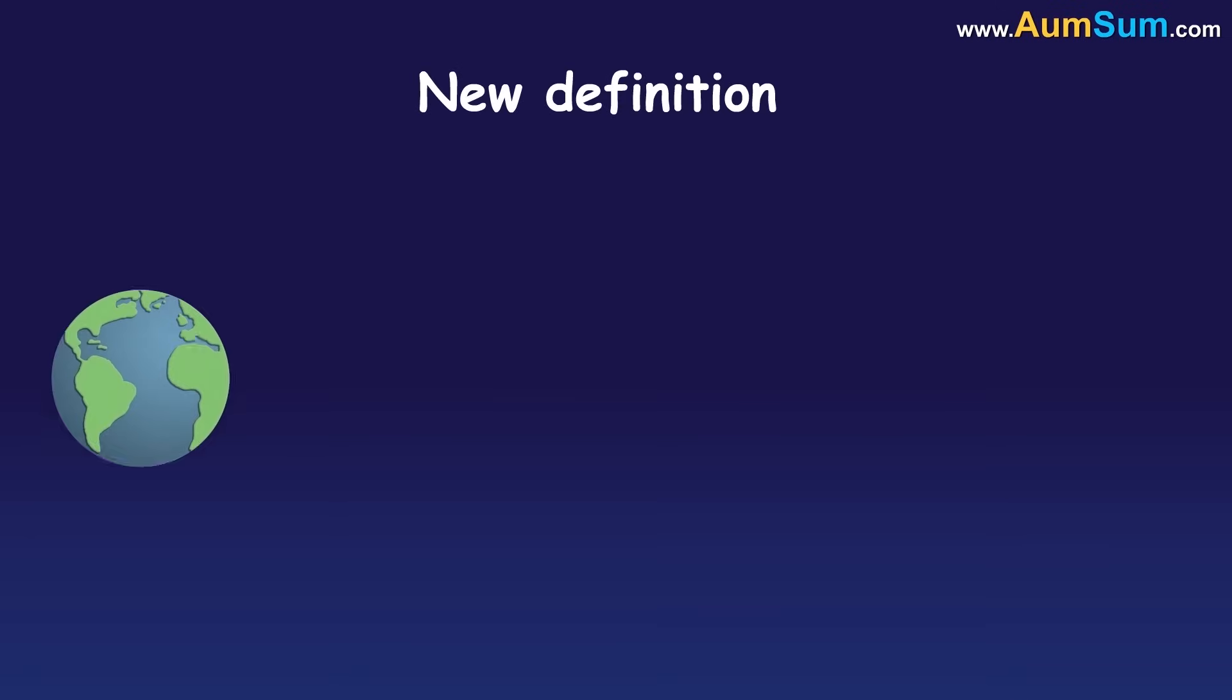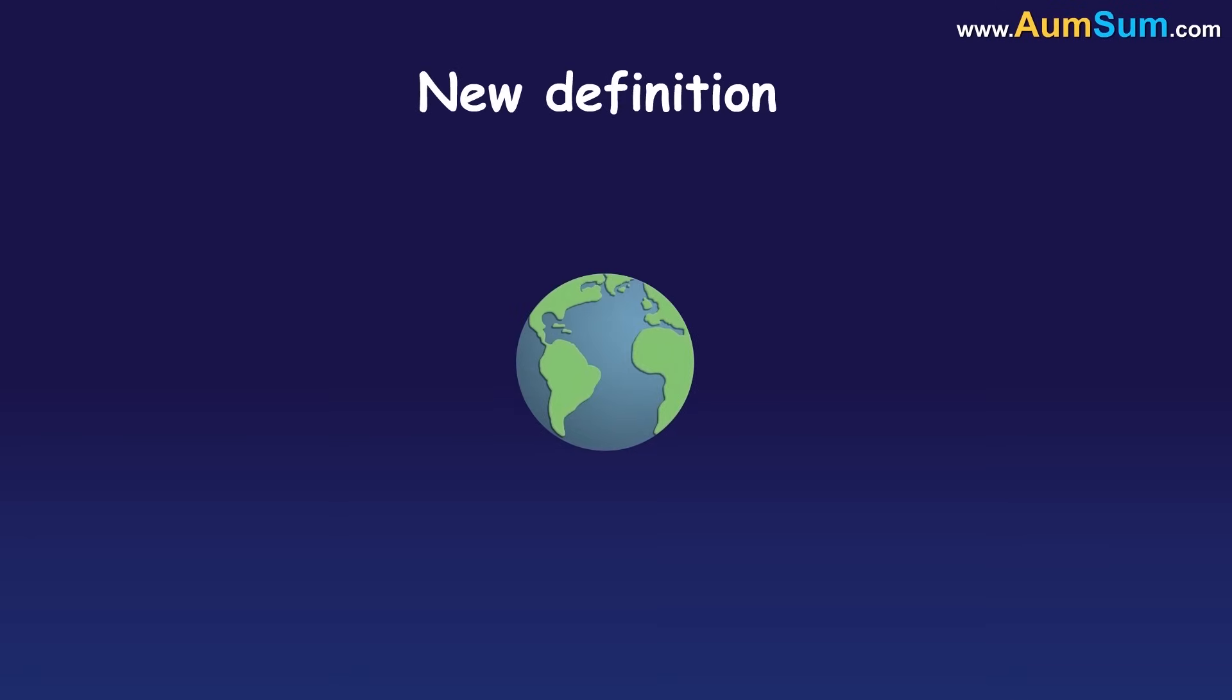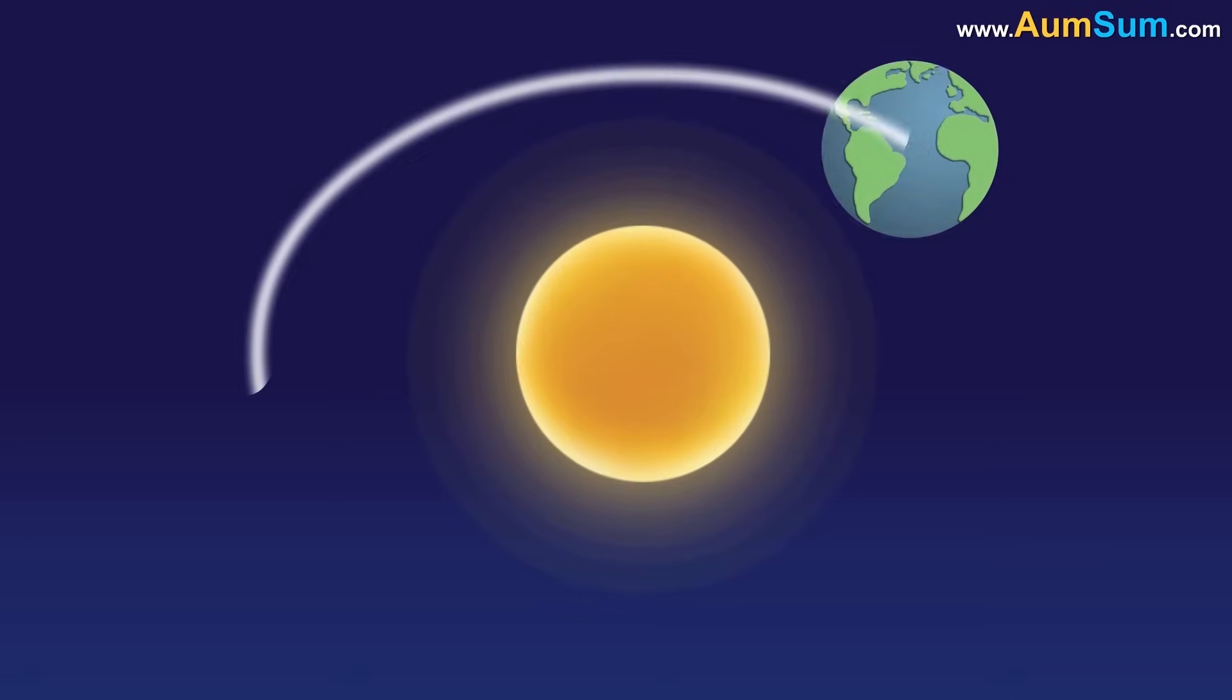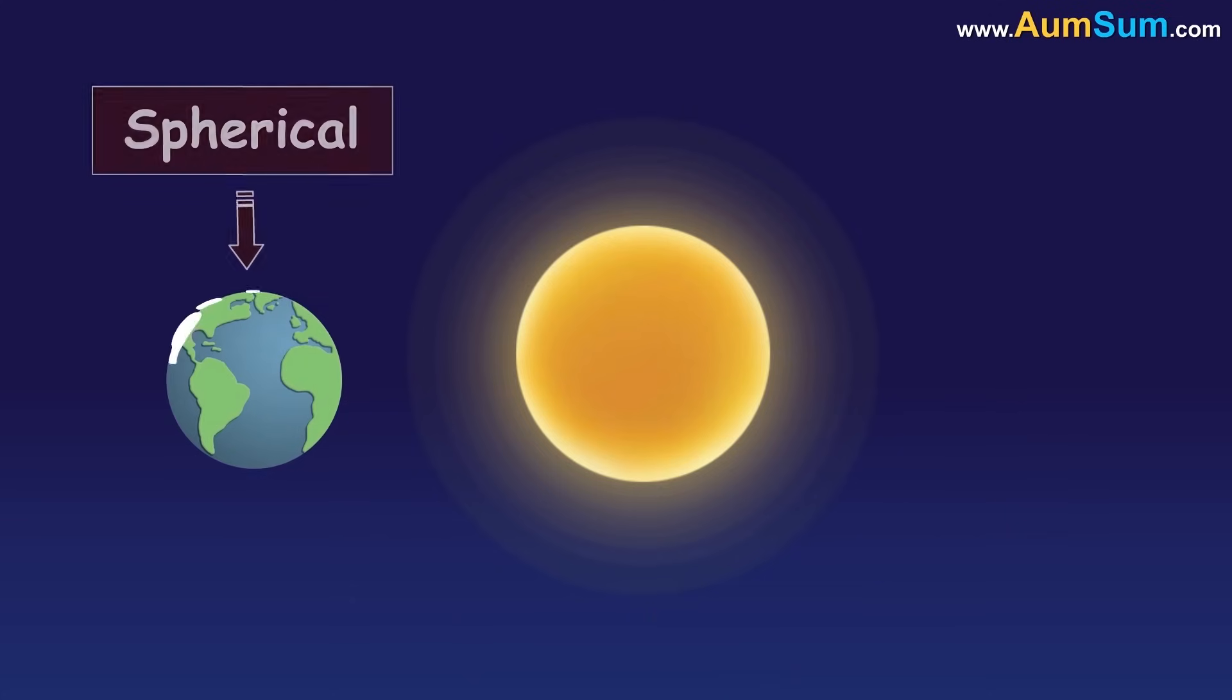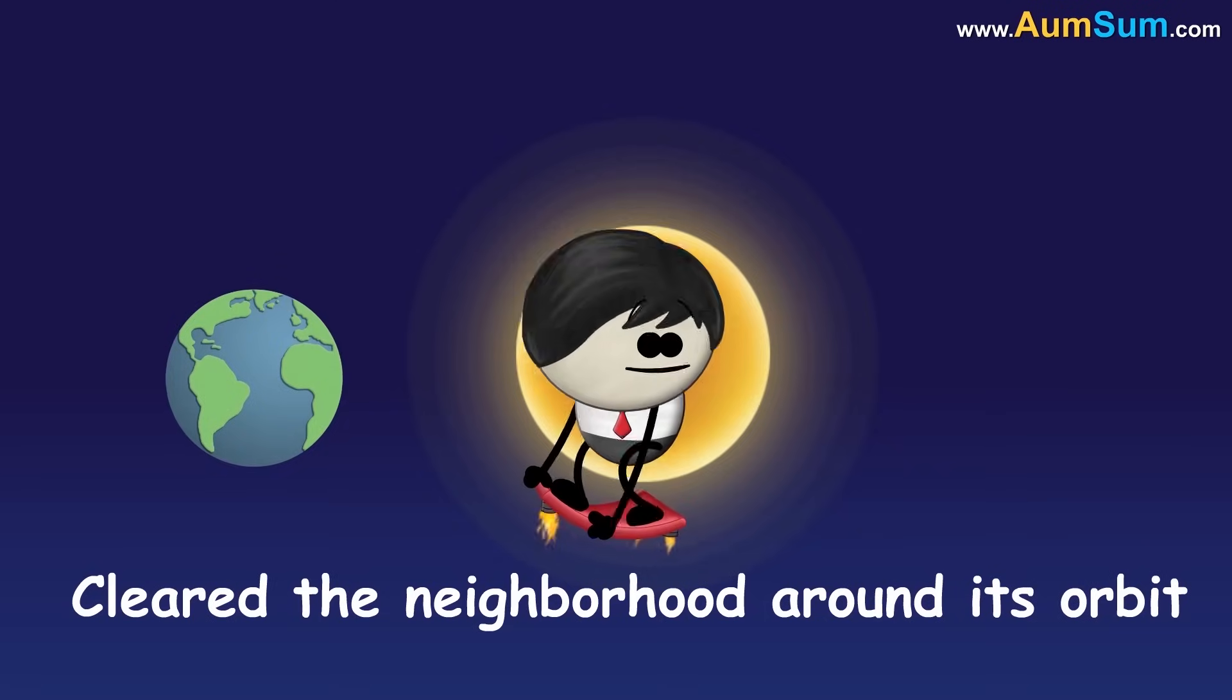According to the new definition, a planet is a celestial body which is in orbit around the sun, is spherical in shape, and it has cleared the neighborhood around its orbit.